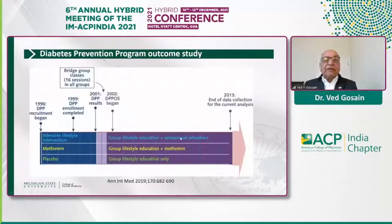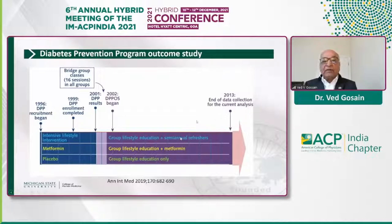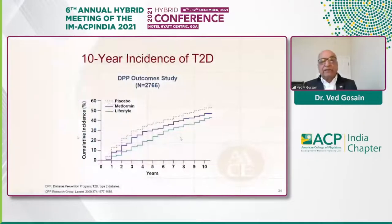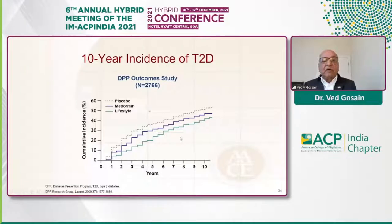In the diabetes prevention program long-term follow-up — another 10 years after the initial results, up to 2013 — the cumulative incidence of diabetes was significantly lower in the lifestyle group, then metformin, then placebo. Almost 50% of placebo patients developed diabetes.